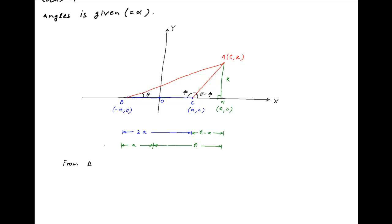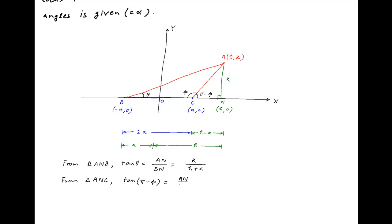From right angle triangle ANB, tan theta is equal to AN divided by BN, which is equal to k divided by (h + a). Similarly, from right angle triangle ANC, tan(π − phi) is equal to AN divided by CN, which is equal to k divided by (h − a). Therefore, minus tan phi is equal to k divided by (h − a).